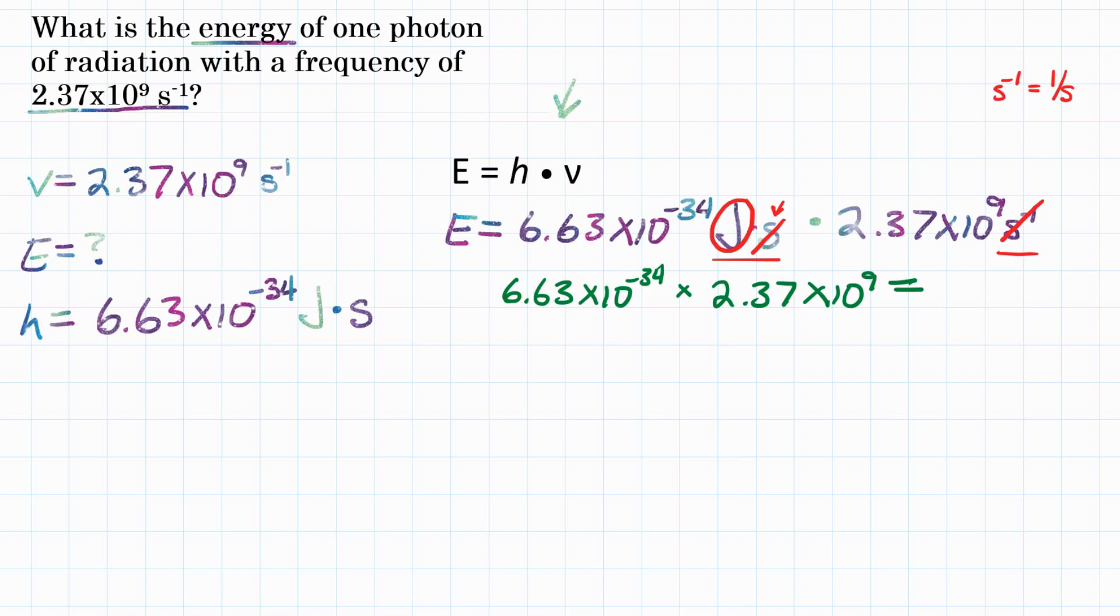We are going to round that to three significant figures. So we will get energy equals 1.57. We'll stop there. But remember, we have to add the times 10, and it is to the negative 24th power.